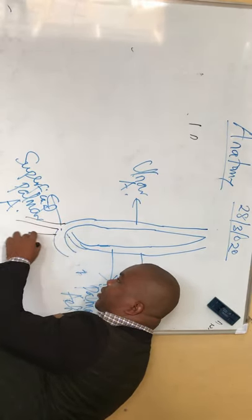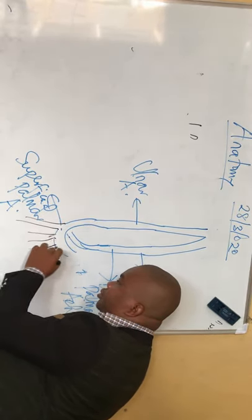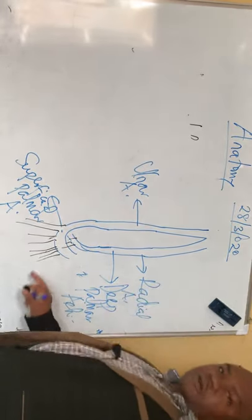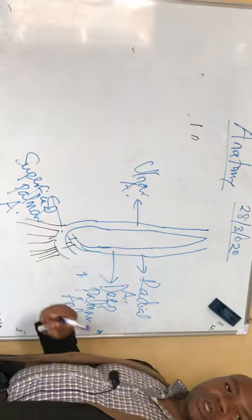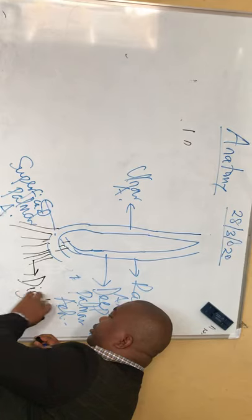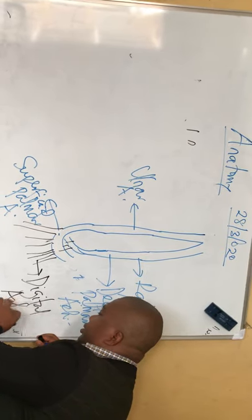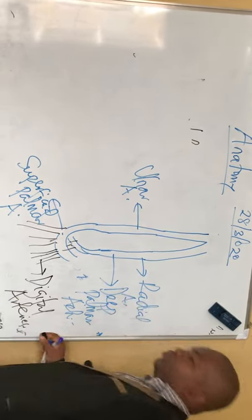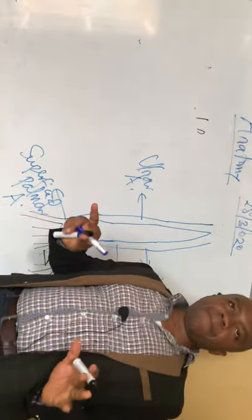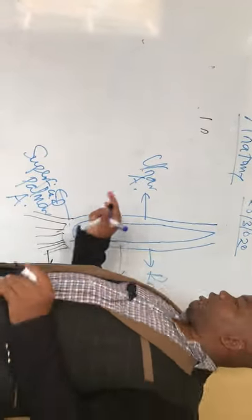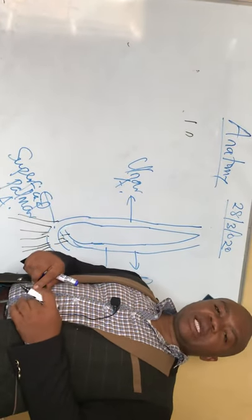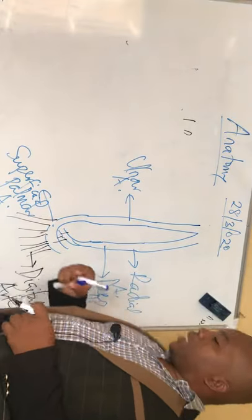Both the superficial palmar arch and the deep palmar arch will form branches that go into the digits to give them the necessary supply. These are called the digital arteries. That covers the arterial distribution of the pectoral girdle and upper limb.